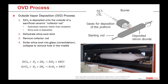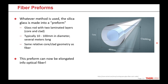An advantage of OVD is you can make the preform as large in diameter as you want. There's also a variation called VAD — Vapor-phase Axial Deposition — where instead of depositing on the side, the torch deposits on the end and we grow the preform lengthwise. The advantage there is you can create a very long preform — a large pool of glass.